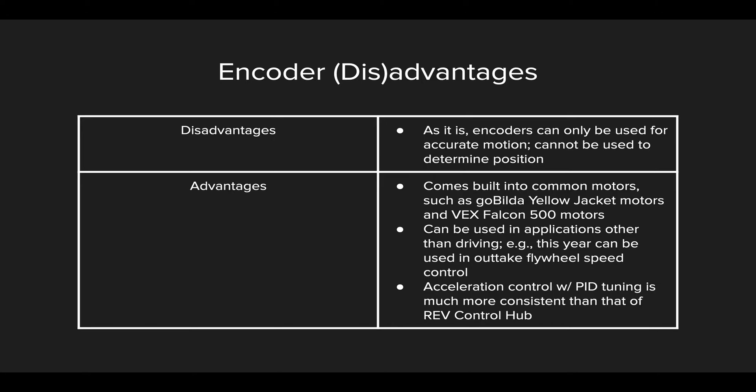Flywheel speed control would be very important to teams varying the speed of their outtake flywheel in order to launch the ring different distances. You have to control that flywheel speed very precisely to have precise control over your ring's flying distance. On top of that, acceleration control using encoders after your motor's PID values have been tuned is much more consistent than if you were to simply rely on your control hub varying power.